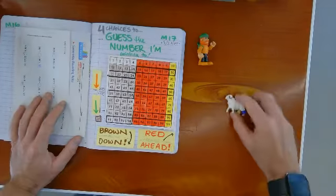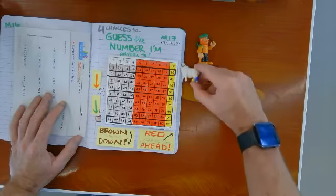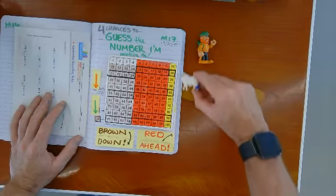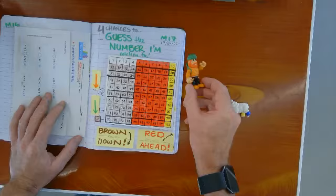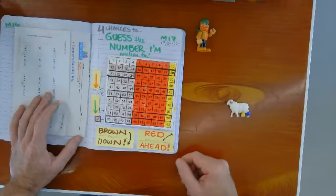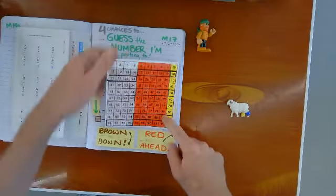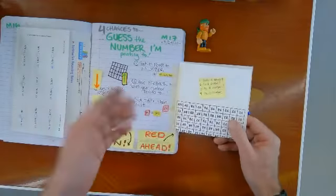So the ram is going to say, I'm thinking of a number that rounds to, and then the ram picks a number. The human, the little camper, the hiker, is going to ask questions trying to guess what the number is.